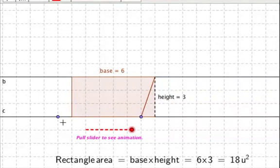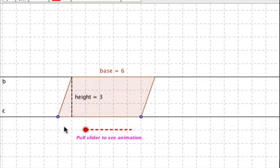And the area of a rectangle is base times height, which is six times three is eighteen. And that means the area of the parallelogram is also eighteen.